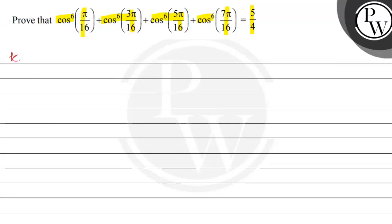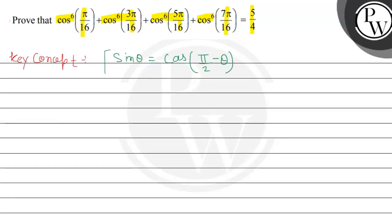So the key concept is: in this question we have to prove the value that is given, and I will use the identity that sin θ equals cos(π/2 minus θ). I will use this identity in the given question. So let's start the question.